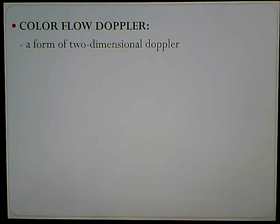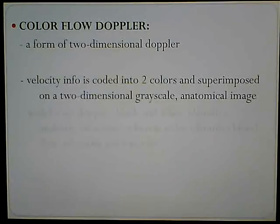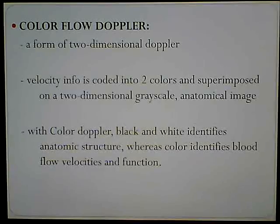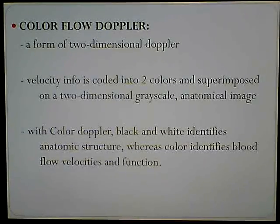Color Flow Doppler is a form of two-dimensional Doppler, just like grayscale is. Velocity information is coded into two colors — usually red and blue — then superimposed on top of that two-dimensional grayscale anatomical image. With color Doppler, black and white identifies the anatomic structure, whereas the color identifies blood flow velocities and function. You've seen the ICA, CCA, arteries and veins — you see the black and white 2D picture, then with the push of a button you turn the color on and that blood fills up the vessel, like another picture slapped on top.